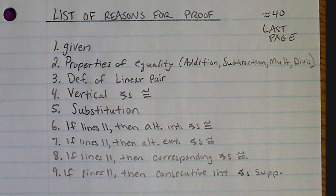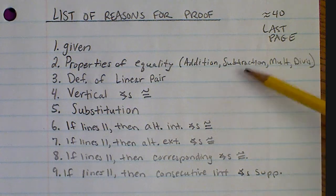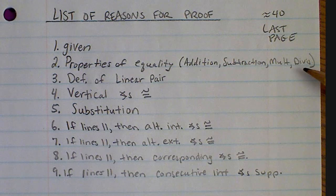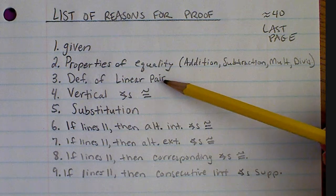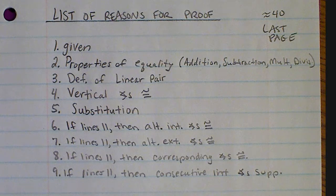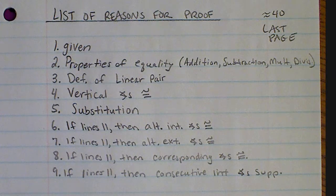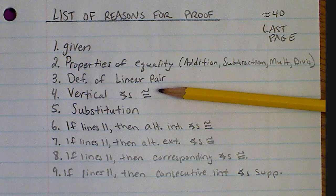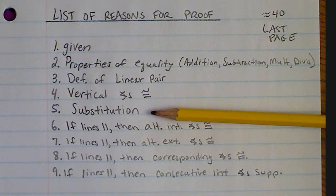The reasons we've learned so far: 'given' is always the first reason. The properties of equality — addition, subtraction, multiplication, and division — are used in algebraic proofs like the ones we did at the beginning. The definition of a linear pair proves that two angles forming a linear pair are supplementary. Vertical angles are congruent, so if you state two vertical angles are congruent, that's your reason. Substitution is what I used in the last example.